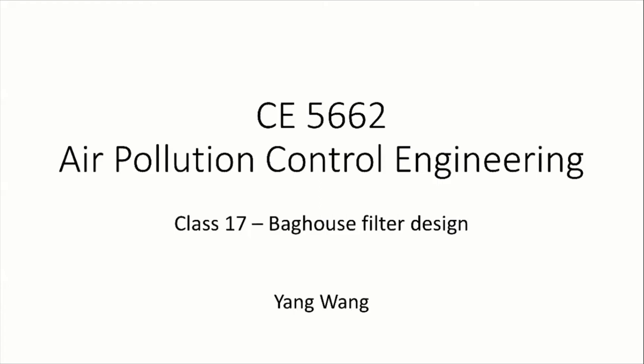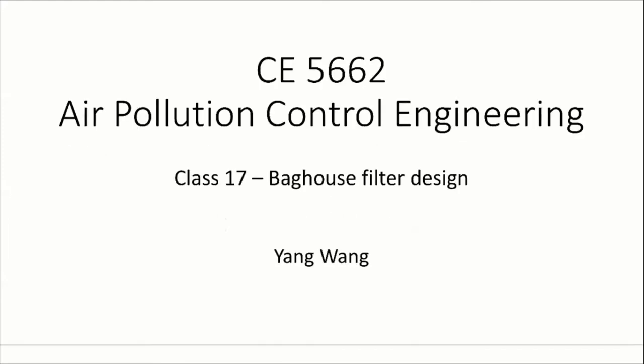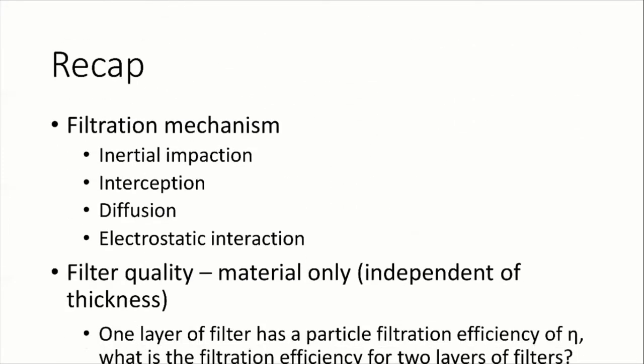Today we're going to learn more about baghouse filters. Last class, we mainly covered the mechanism of filtration and how it can happen in other places. For example, we use furnace filters in buildings like Butler Carlton Hall, using air handlers with MERV 13 or MERV 15 rating filters to generate clean air. When we use a vacuum at home, we also have a vacuum bag to filter dust and prevent particles from re-suspending in the room. A lot of masks also use filtration.